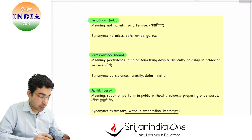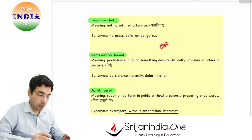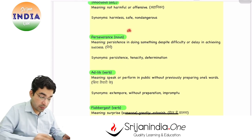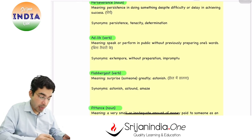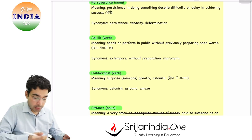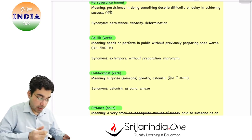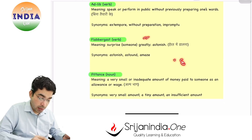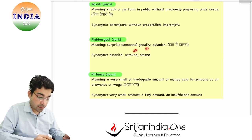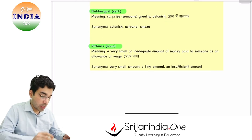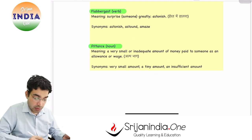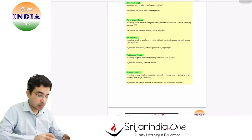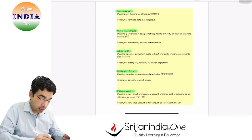Vocabulary words: 'Innocuous' means not harmful or offensive. 'Perseverance' means patience, persistence, tenacity, determination. 'Ad lib' means without preparation, impromptu. 'Flabbergast' means to surprise someone greatly, astonished. 'Pretence' means a very small amount, a tiny amount, an insufficient amount. These are the vocabulary words for today. If you come across any other important word, write it down with its meaning in the comment section.